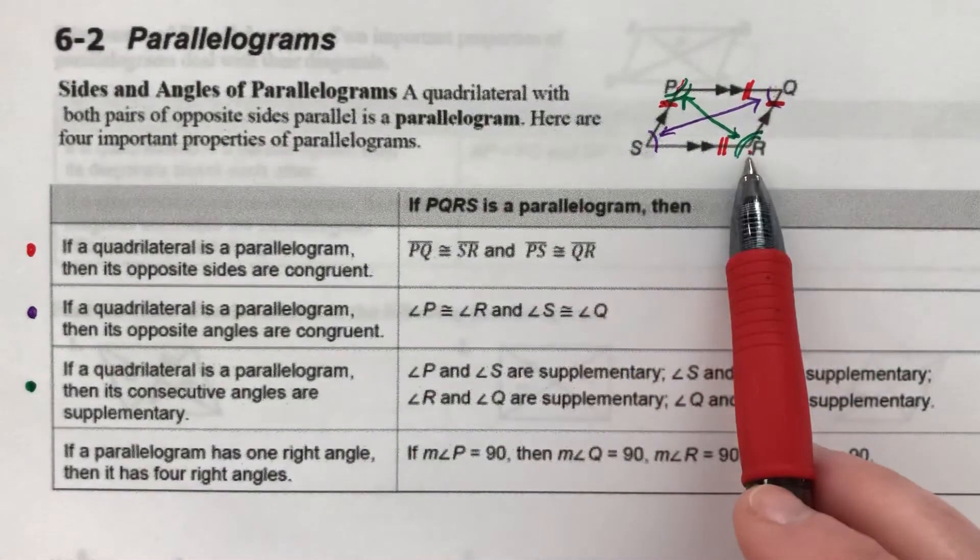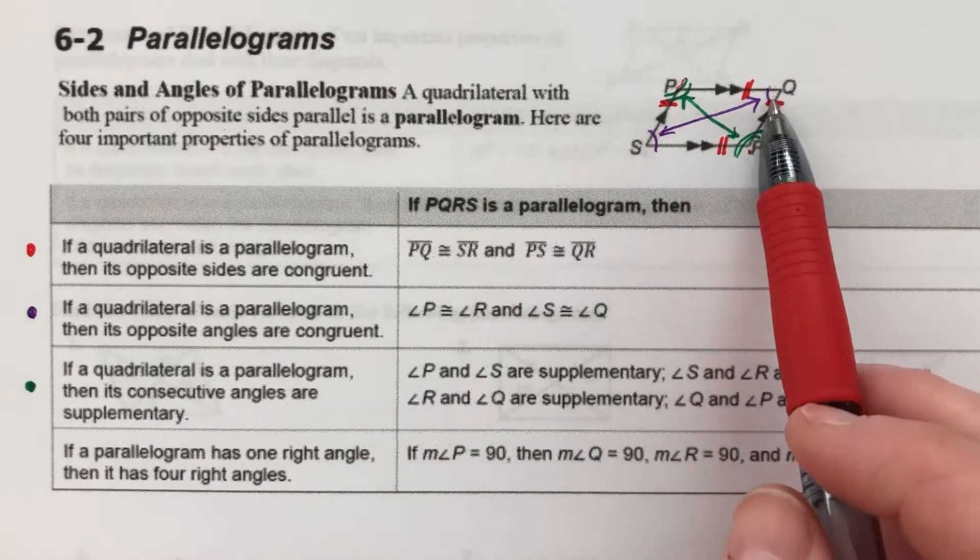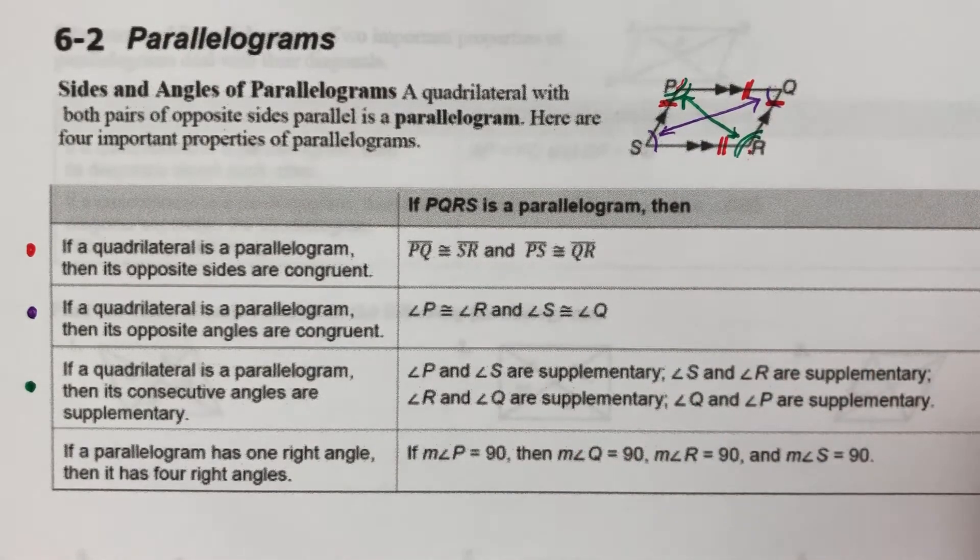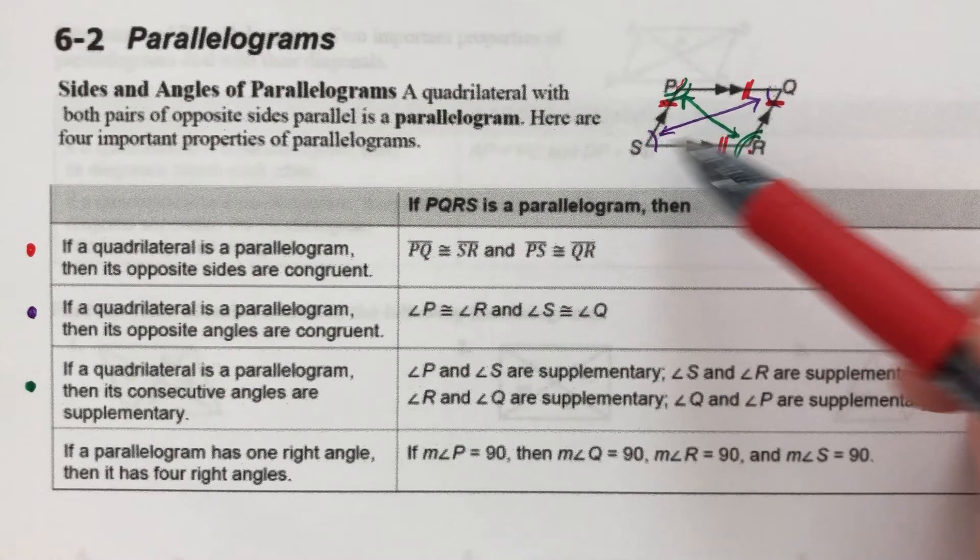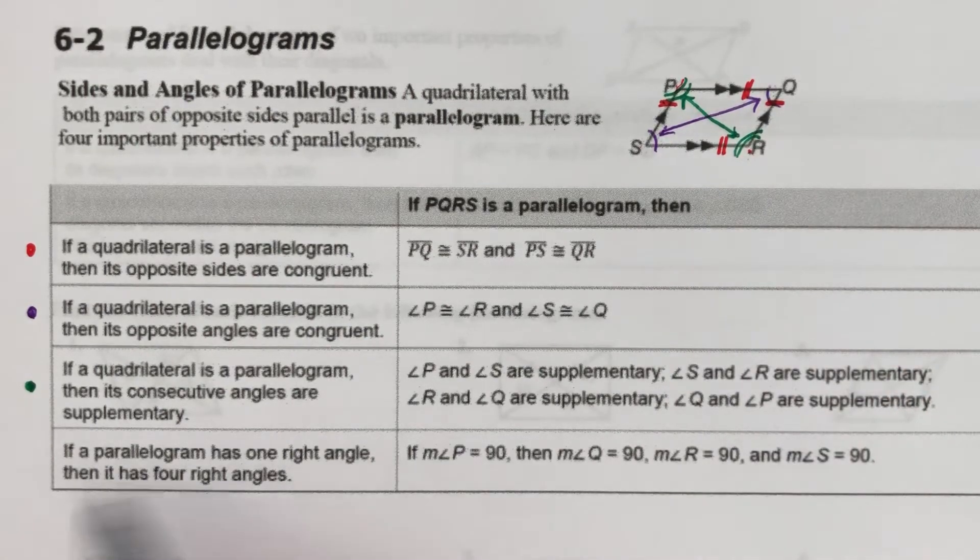So S and R are supplementary, R and Q are supplementary, Q and P are supplementary, P and S are supplementary. So angles next to each other, on either side of each other, are always going to add up to 180.